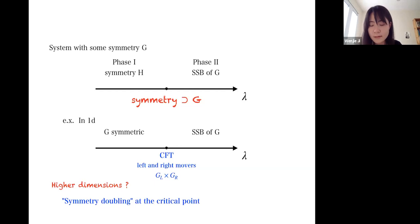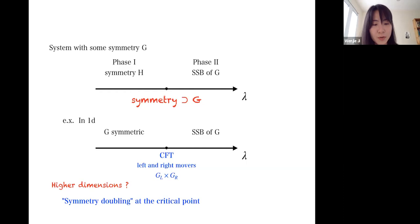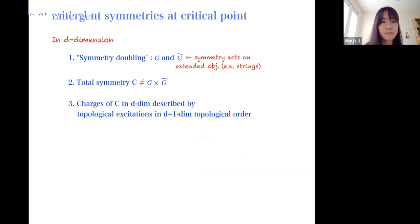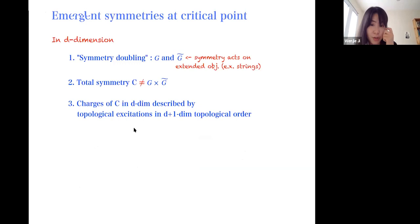This is like the famous Kramer-Wannier duality, and historically the question is how to generalize to higher dimensions. This talk is mostly about describing such symmetry doubling at the critical point for the higher-dimensional case. We are going to study this for a Landau critical transition with G-symmetry.